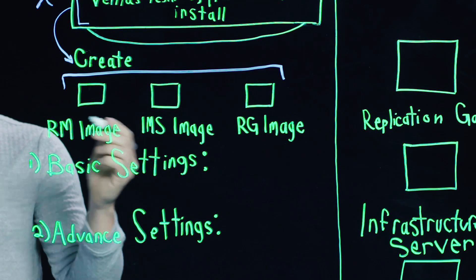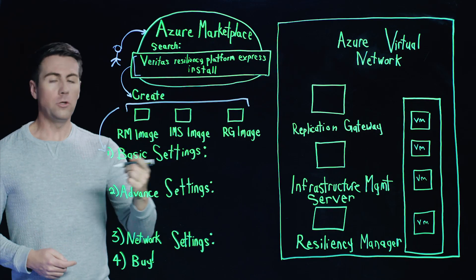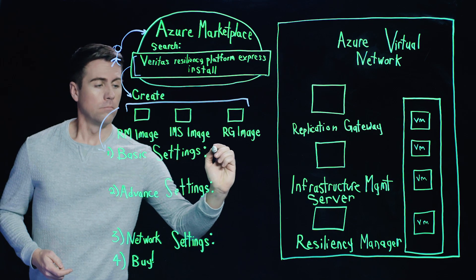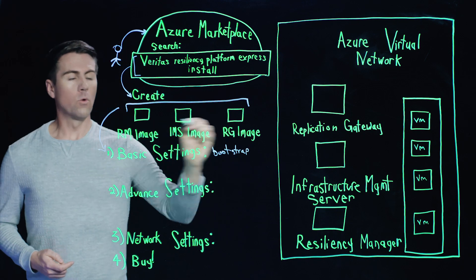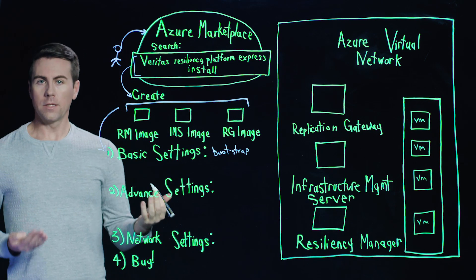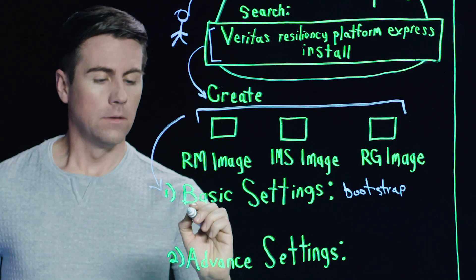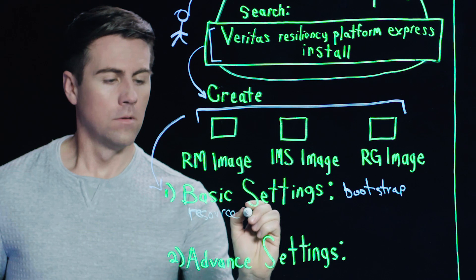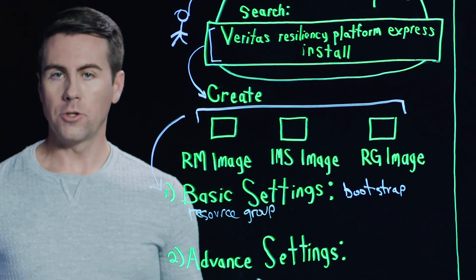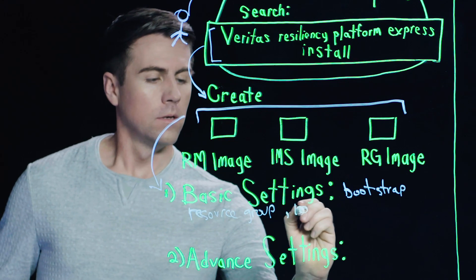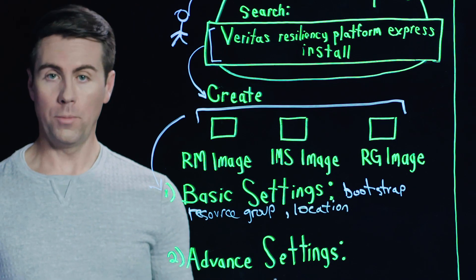Once this process is kick-started, we then have to go and enter some basic information. First are the basic settings, which are the bootstrap inputs for our appliances — things like the admin passwords as well as NTP server settings. We'll also specify the resource group within Azure, as well as the location or Azure region where we want to deploy our appliances.